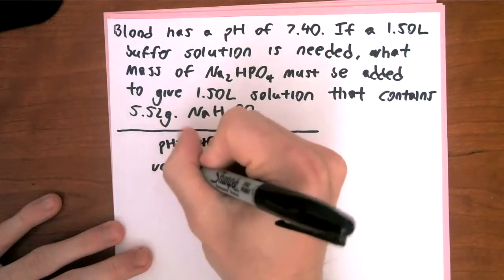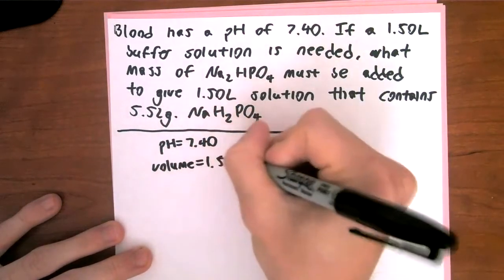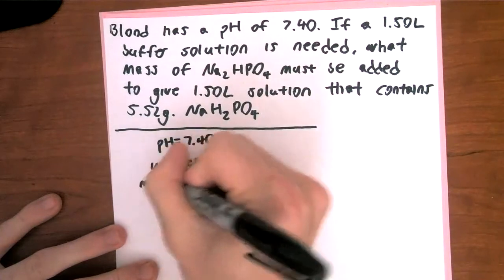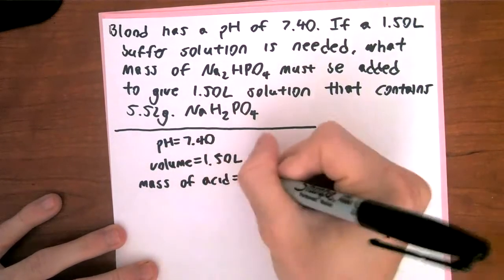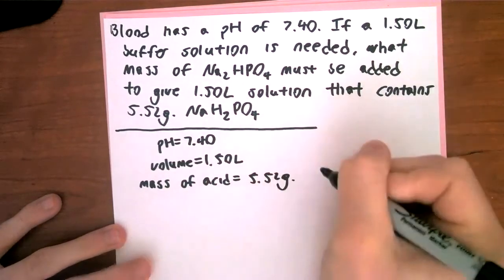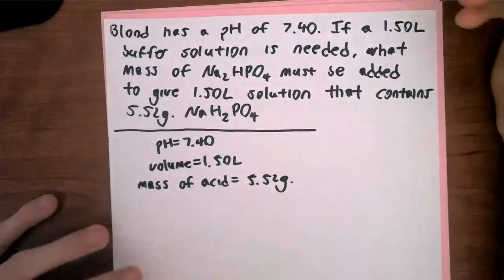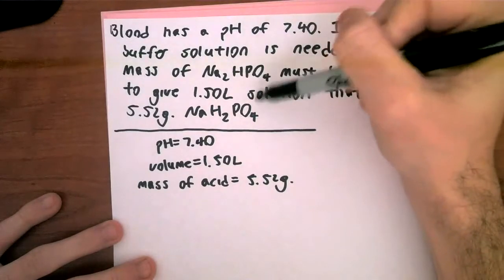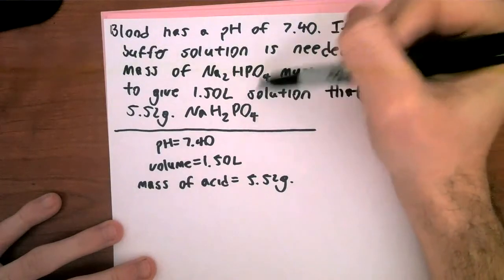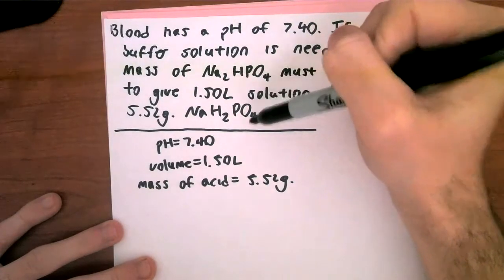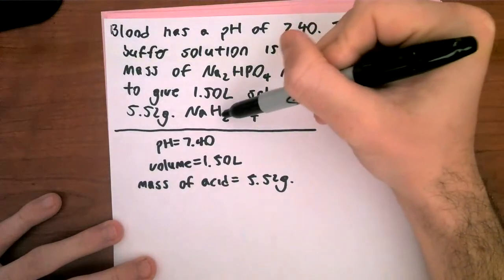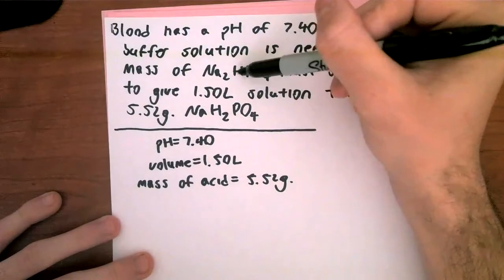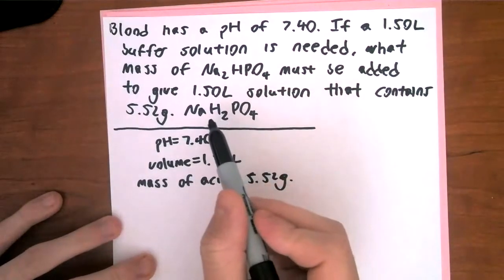We have a volume of solution equal to 1.5 liters and we know the mass of acid is 5.52 grams. Looking at our two constituents: NaH₂PO₄ and Na₂HPO₄. The difference is we lost an H going from one to the other. When we donate an H, that denotes a Brønsted-Lowry acid — so NaH₂PO₄ donates the H, most likely to water, and that is my acidic character in the problem.